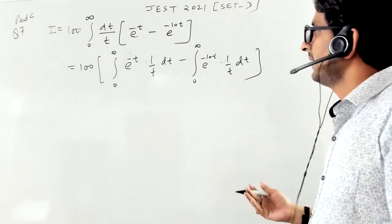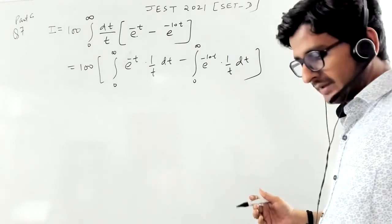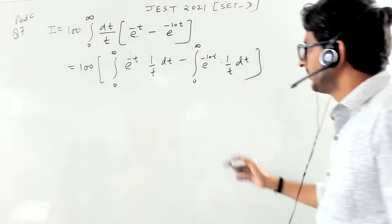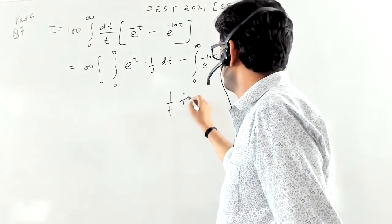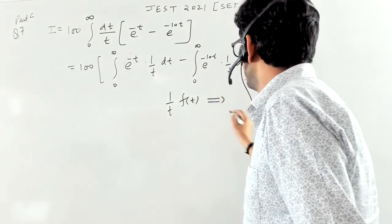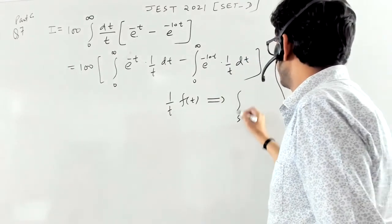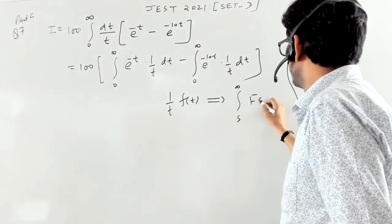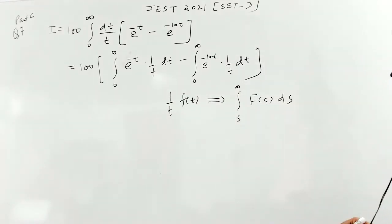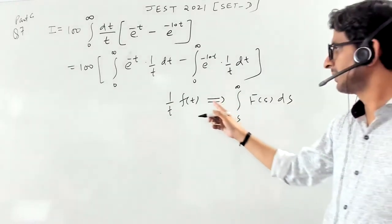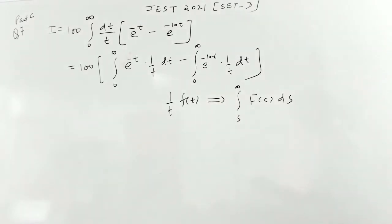And that is, if you have something like 1 by t, ft, then it will go to integral s to infinity, fs ds, where this fs is actually Laplace transformation of ft.